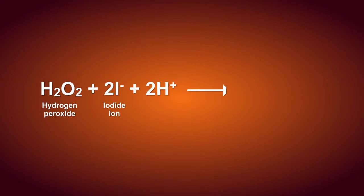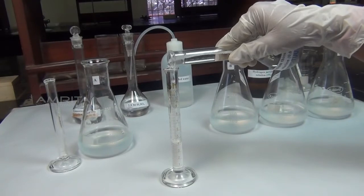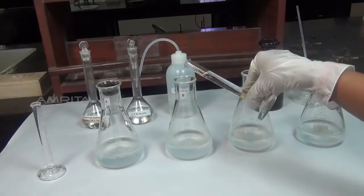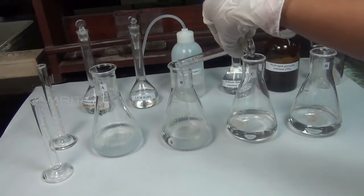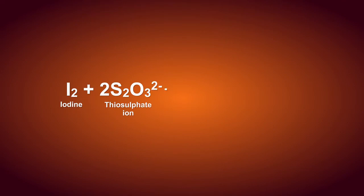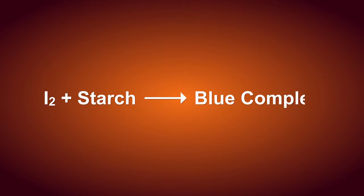Hydrogen peroxide is an oxidizing agent that oxidizes iodide ions to iodine in an acidic medium. The reaction is monitored by adding a known volume of sodium thiosulphate solution and starch solution to the reaction mixture. The liberated iodine reacts with sodium thiosulphate and reduces to iodide ions. When thiosulphate ions are completely consumed, the liberated iodine reacts with starch solution and gives a blue colour.